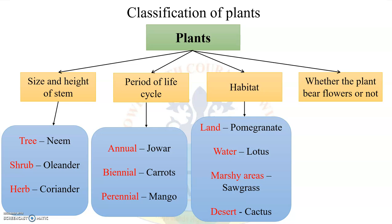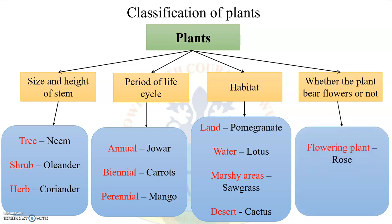The last and final category is whether the plant bears flowers or not. This category can be further divided as flowering plant — example rose — and non-flowering plant — example ferns.